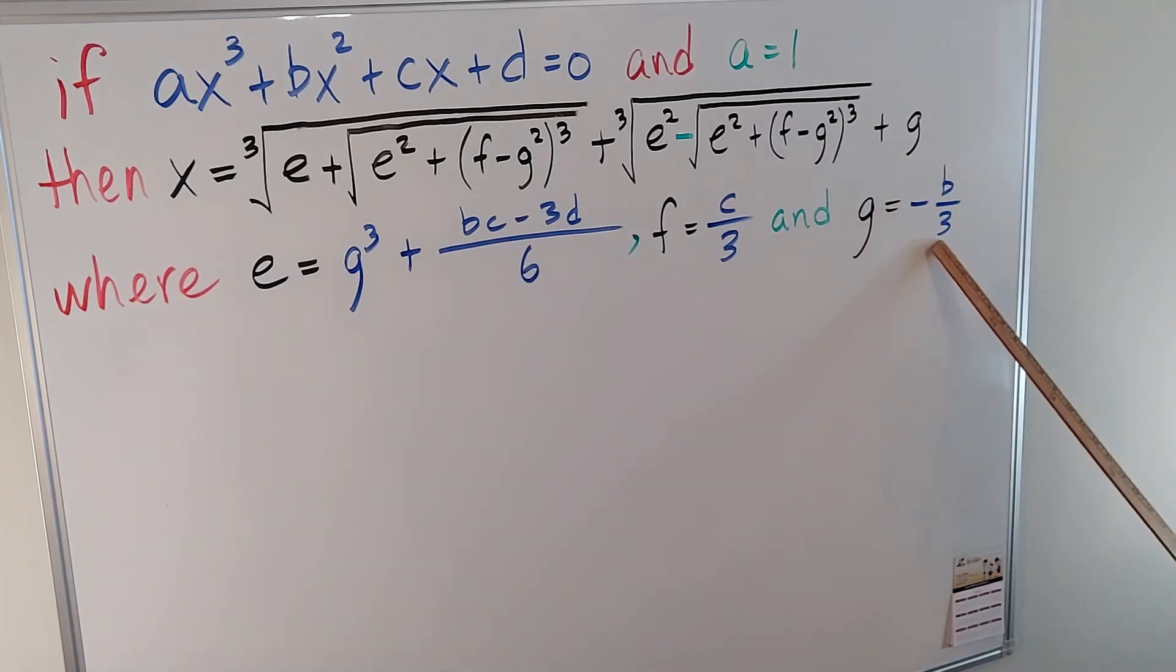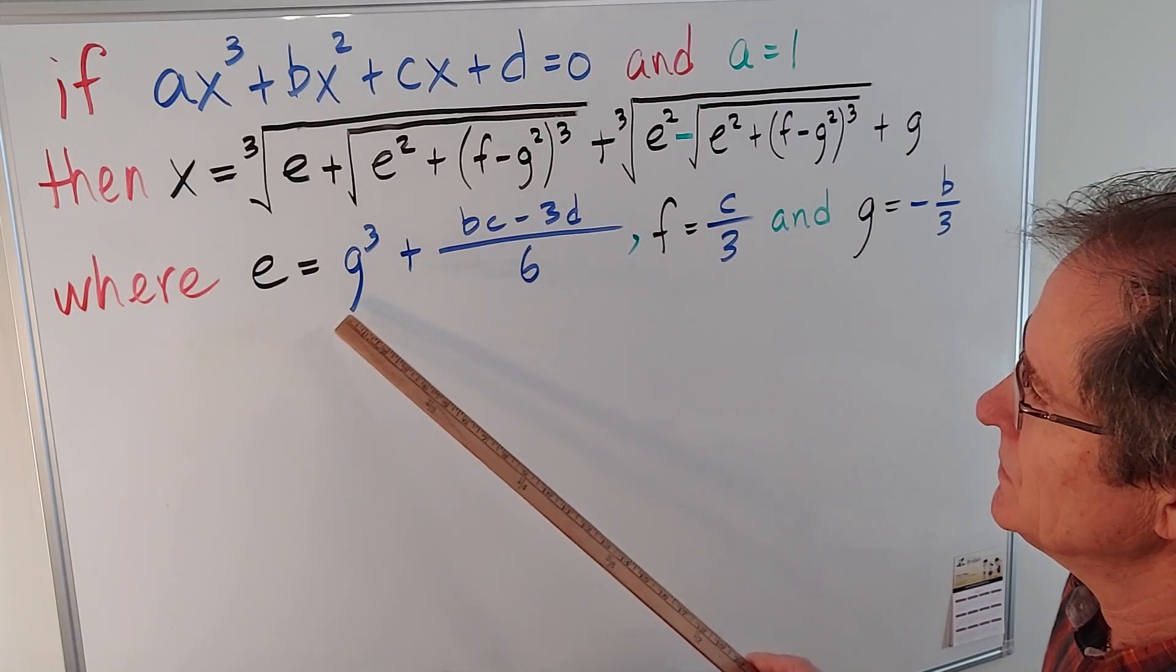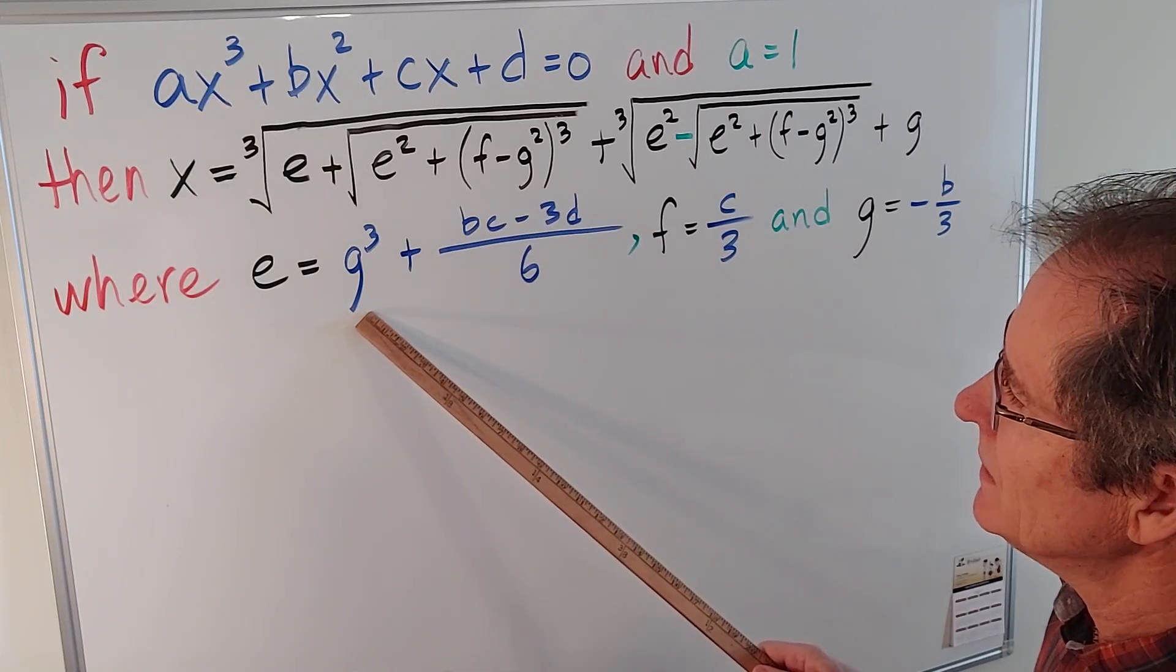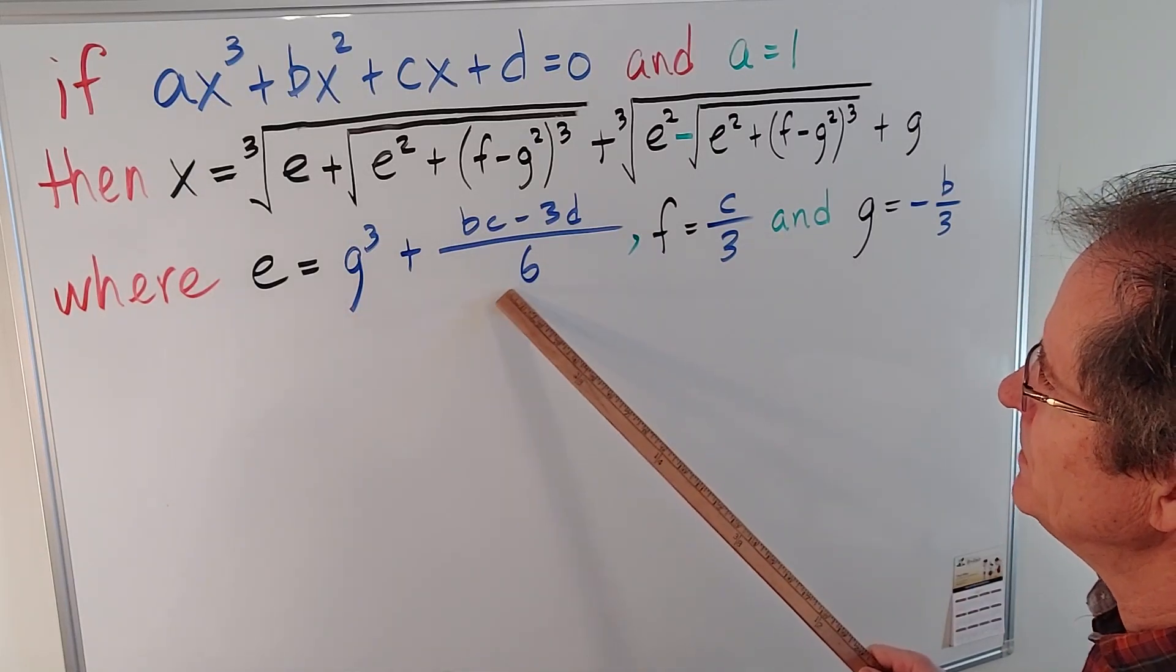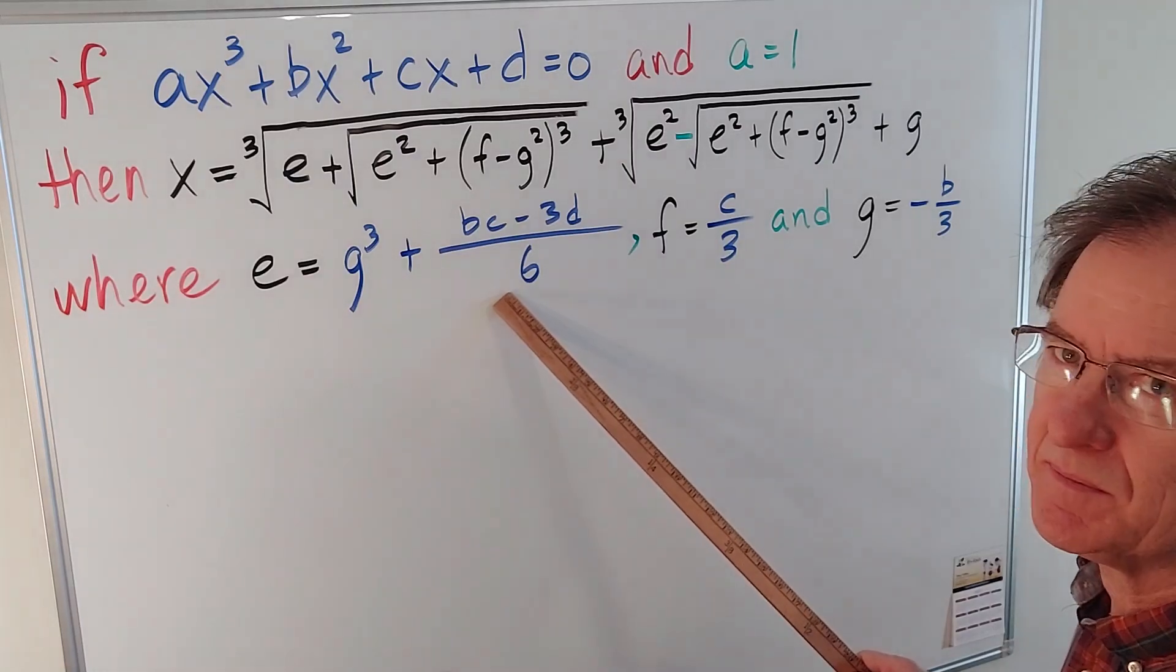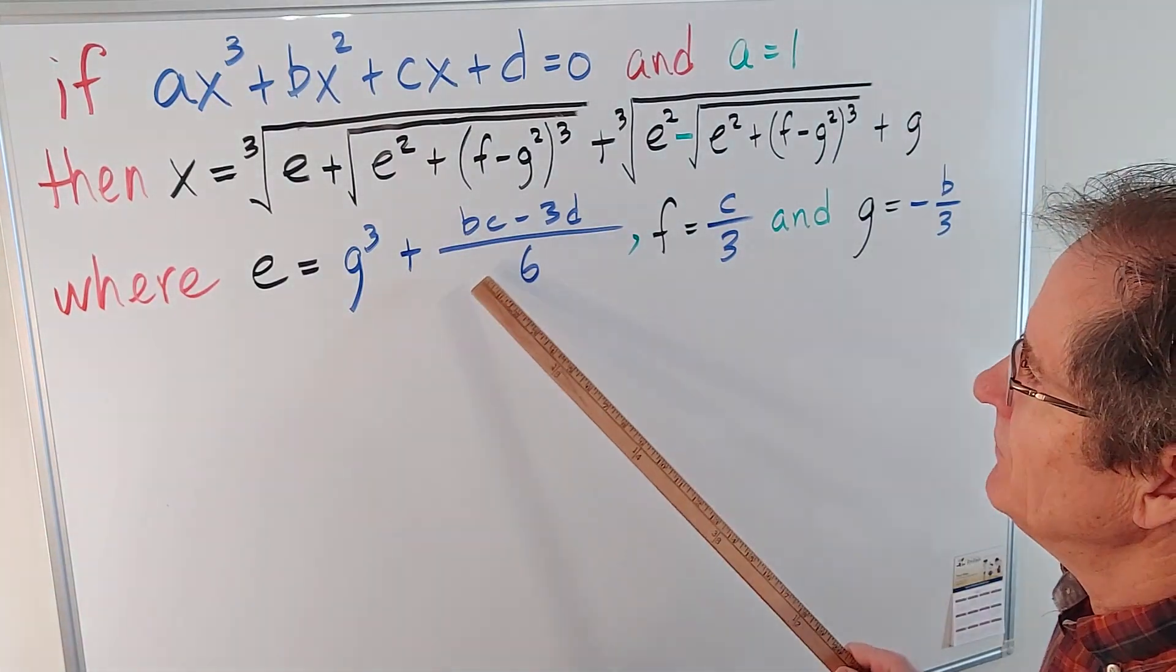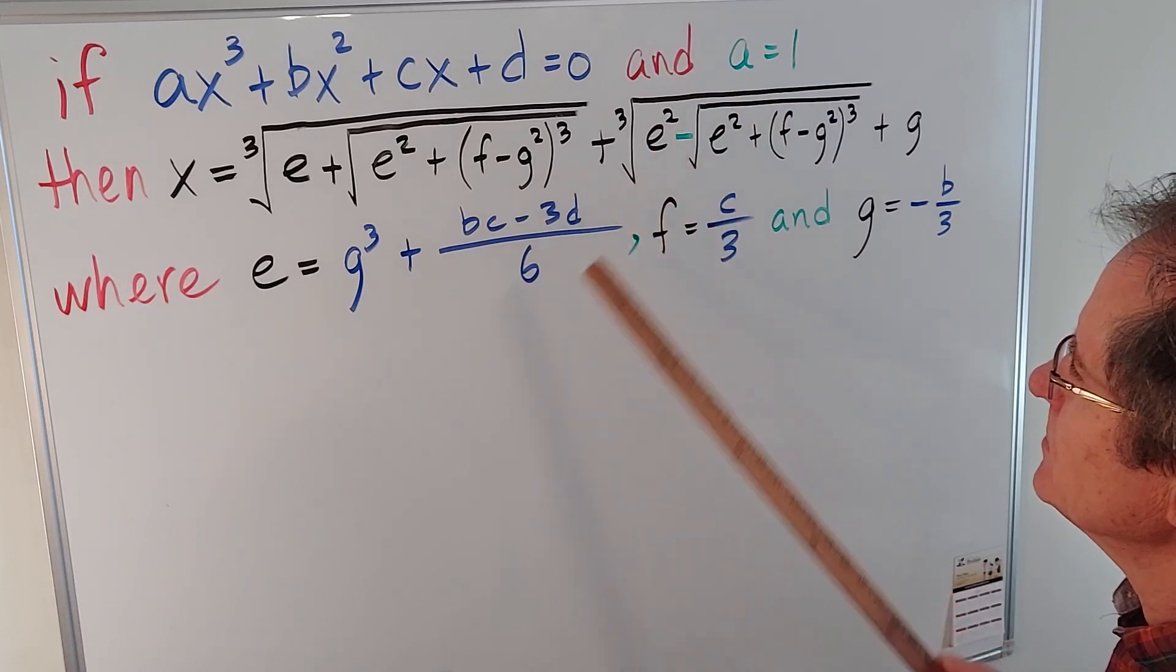Where g is negative b over 3, f is c over 3, and e, which is based on g, is g cubed plus bc minus 3d over 6. If a is not equal to 1, then it's more complicated.